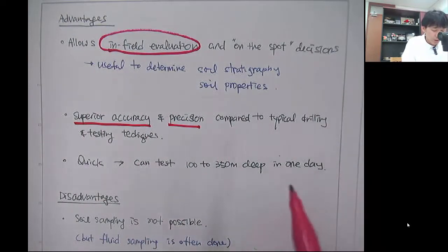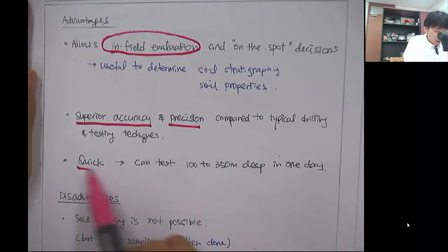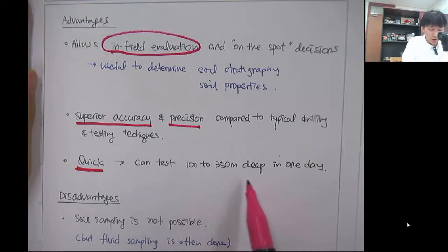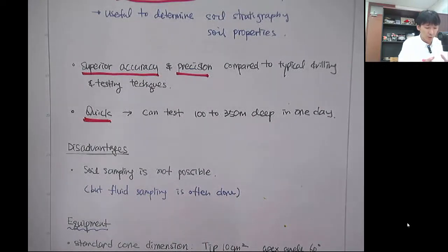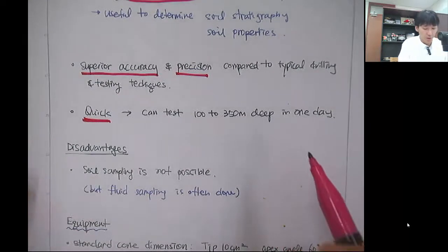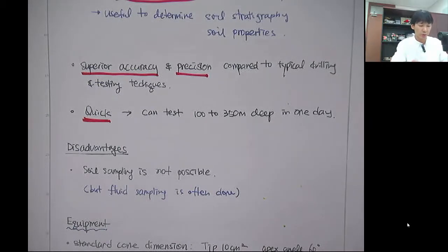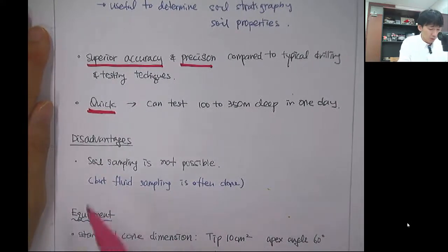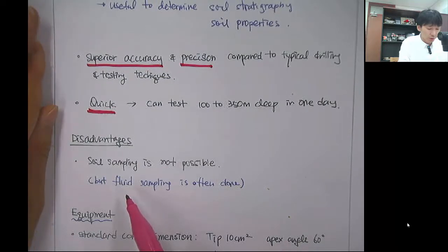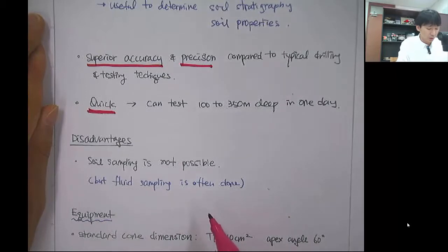It's very quick and can test up to 300 meters deep in one day. But the disadvantage is that because you have geometric limitations, it's not possible to get the soil sample. In SPT, on the other hand, you can use the split spoon sampler to get soil samples directly. However, people install samplers to get fluid in the CPT for environmental engineering purposes, to obtain fluid sampling or gas sampling using the CPT.